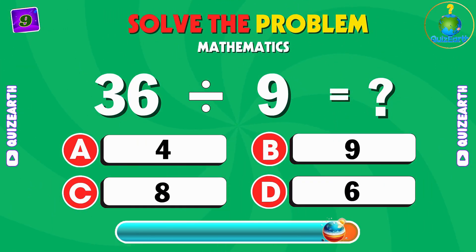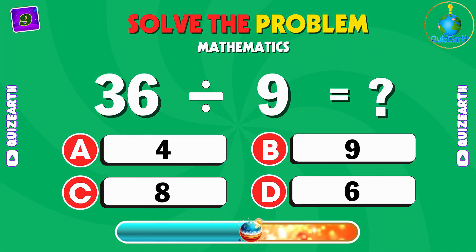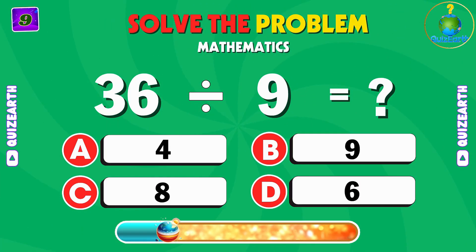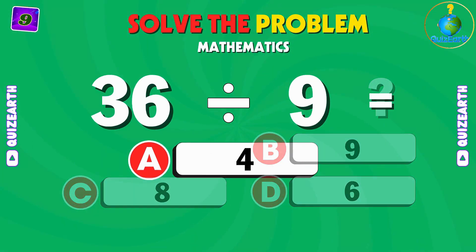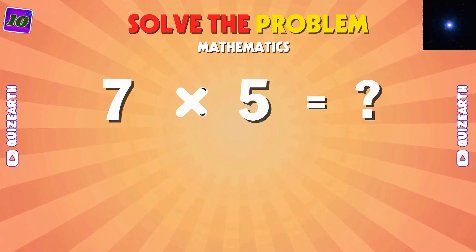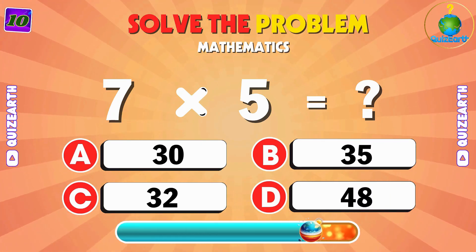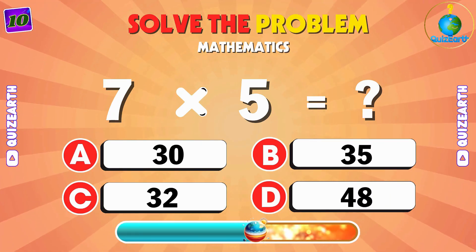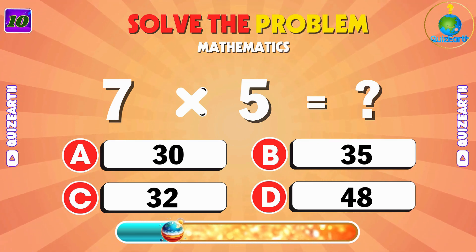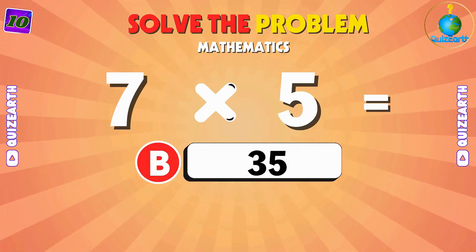Can you split 30 into equal parts? Let's see your answer. A: 4. Multiply 7 by 5 — can you calculate it fast? B: 35.